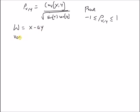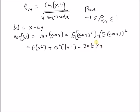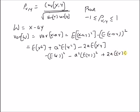We define the variance of this new variable w as variance of x minus ay, which by definition equals expectation of (x minus ay) squared minus expectation of (x minus ay) whole squared. This expands to expectation of x squared plus a squared times expectation of y squared minus two times a times expectation of x, minus a squared times expectation of y whole squared plus two times a times expectation of x times expectation of y.